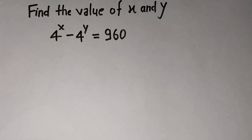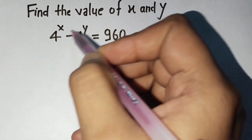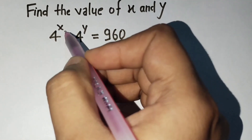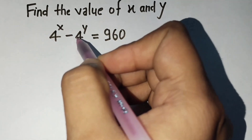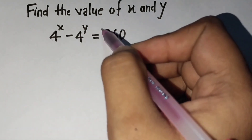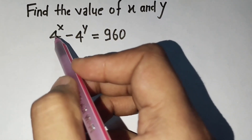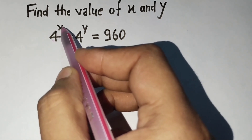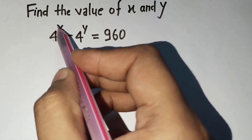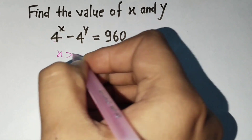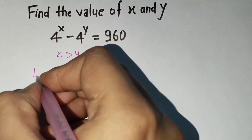Clearly observe that 4 raised to power x is greater than 4 raised to power y, because 4^x minus 4^y gives a positive value — the right side is positive. So I am sure 4^x is greater. Since x is a variable that can change, x is greater than y.